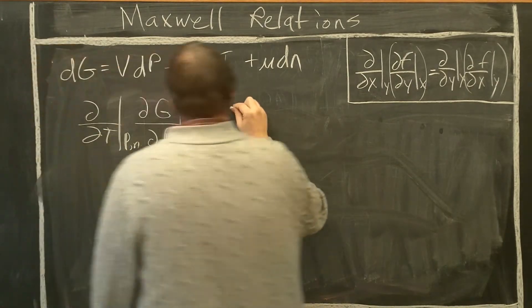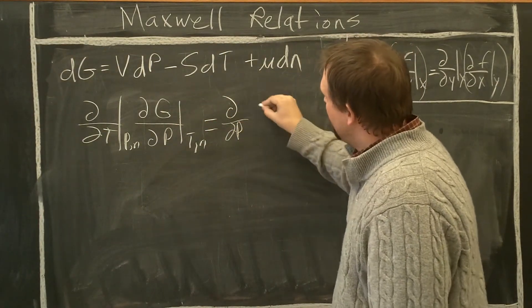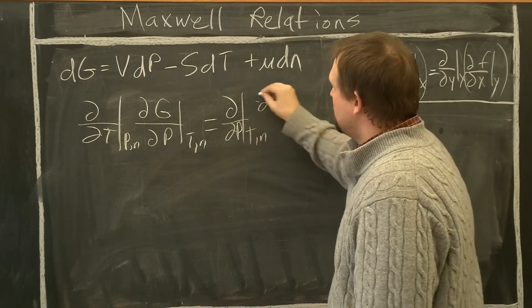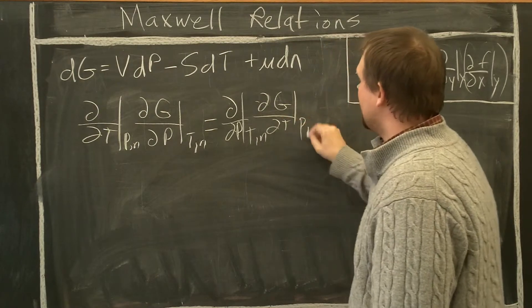Must equal on this side partial with respect to P of constant T comma N, partial G with respect to T constant P comma N.